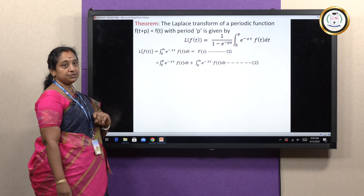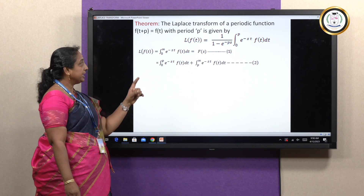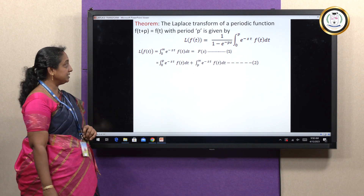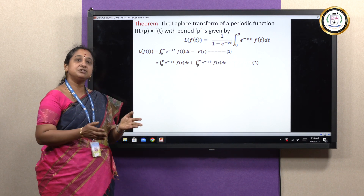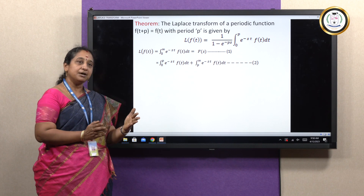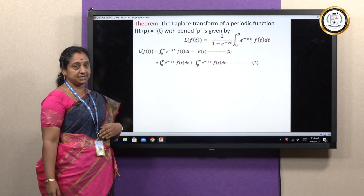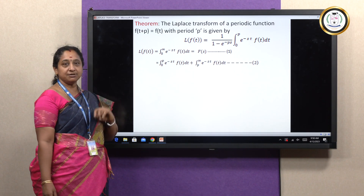We start from the general Laplace Transform: L{f(t)} = integral from 0 to infinity of e^(−st) f(t) dt = F(S). According to the period p, we divide the integral from 0 to infinity into two parts: 0 to p, plus p to infinity. So: L{f(t)} = integral from 0 to p of e^(−st) f(t) dt + integral from p to infinity of e^(−st) f(t) dt.